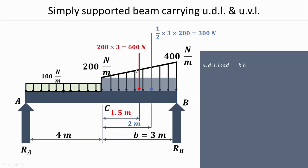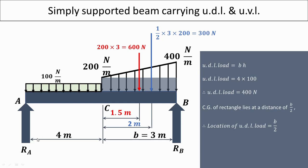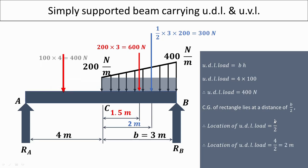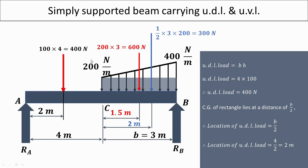The second load to convert is the UDL of 100 Newton per meter. For 1 meter the load is 100 Newton, so for 4 meters it is 100 into 4 equals 400 Newton. It acts at the center of the width: B is 4 meters, so 4 divided by 2 equals 2 meters. So the 400 Newton force acts at a distance of 2 meters.